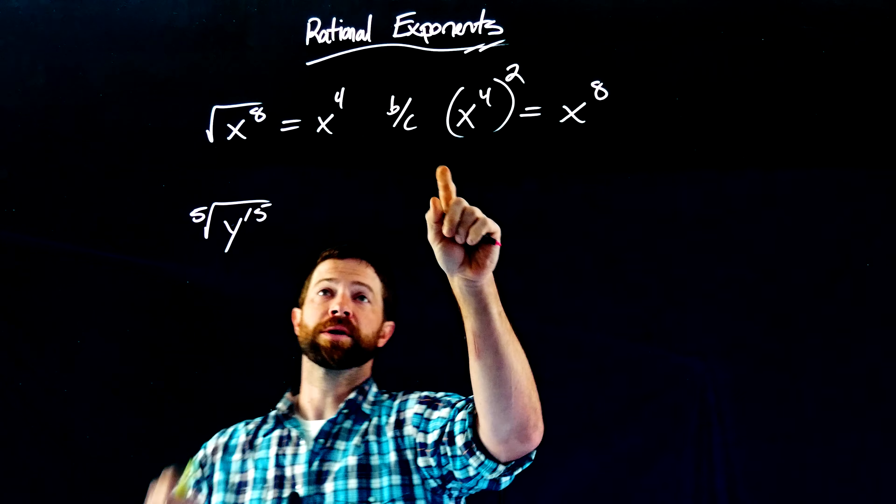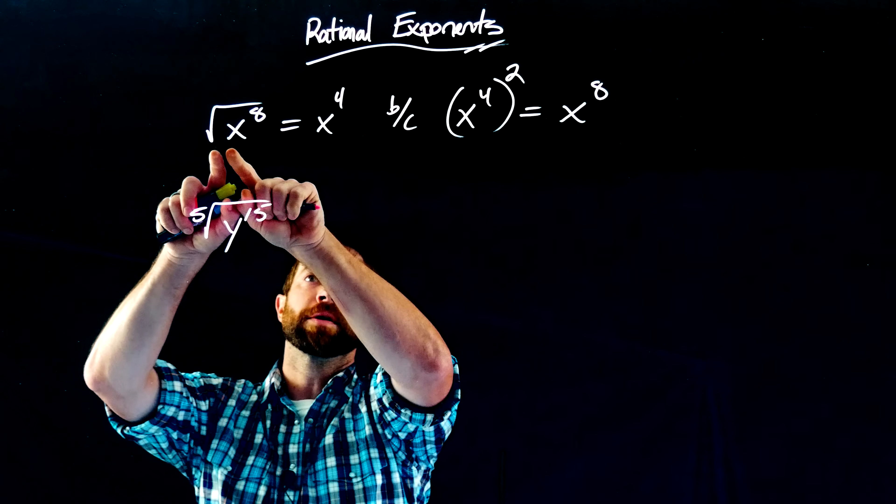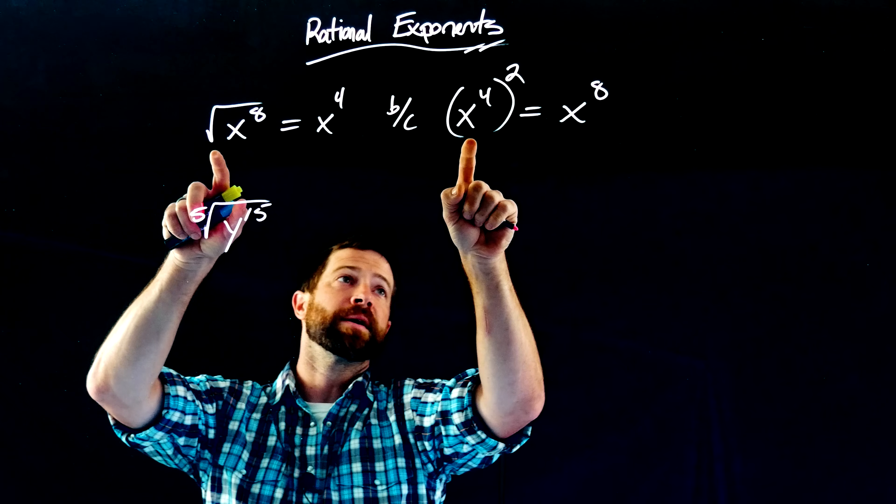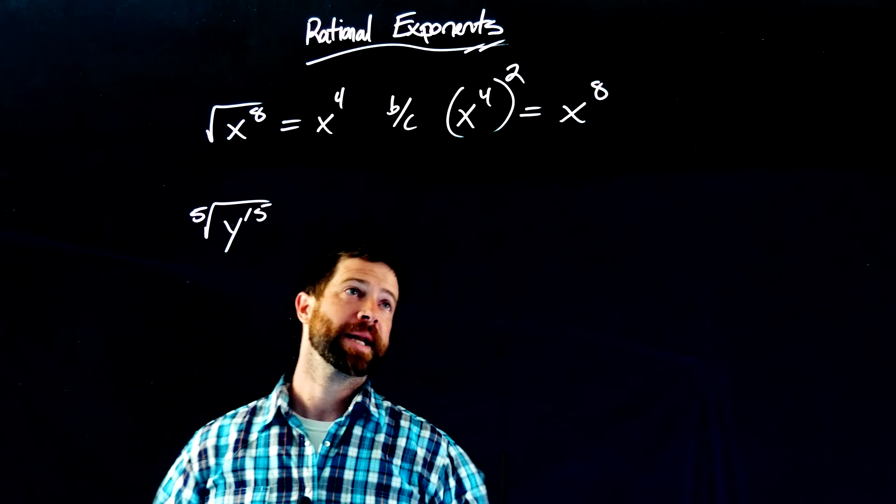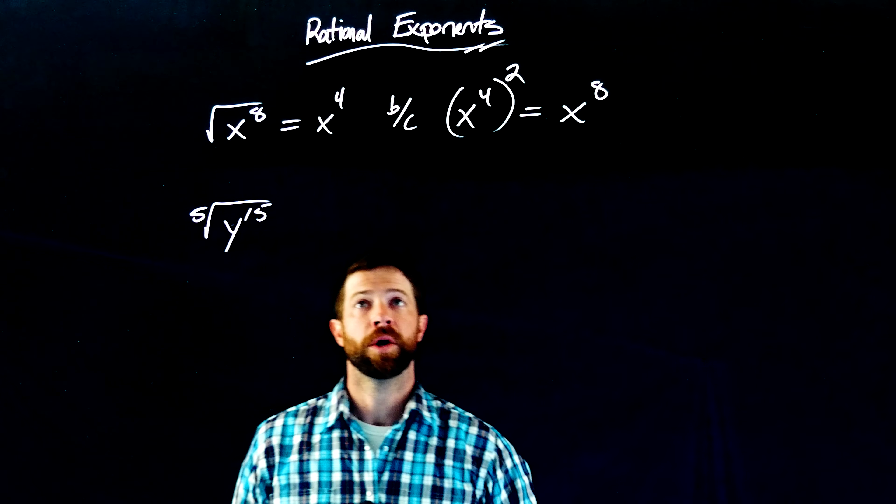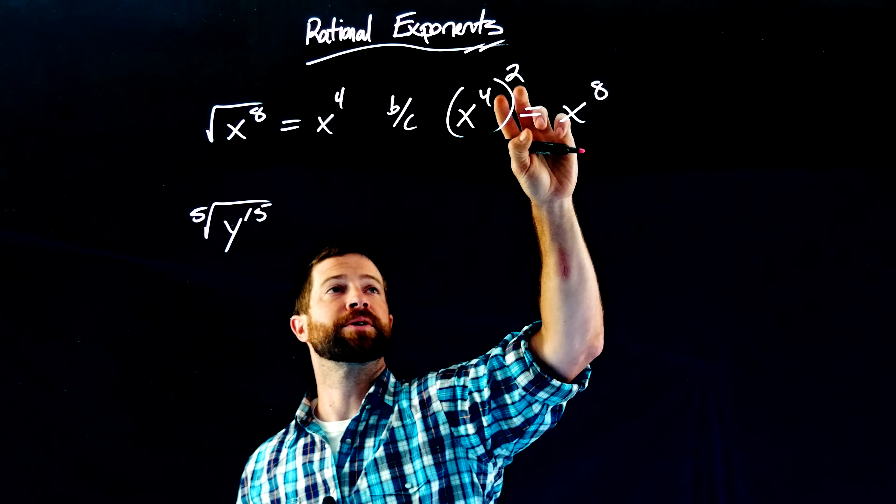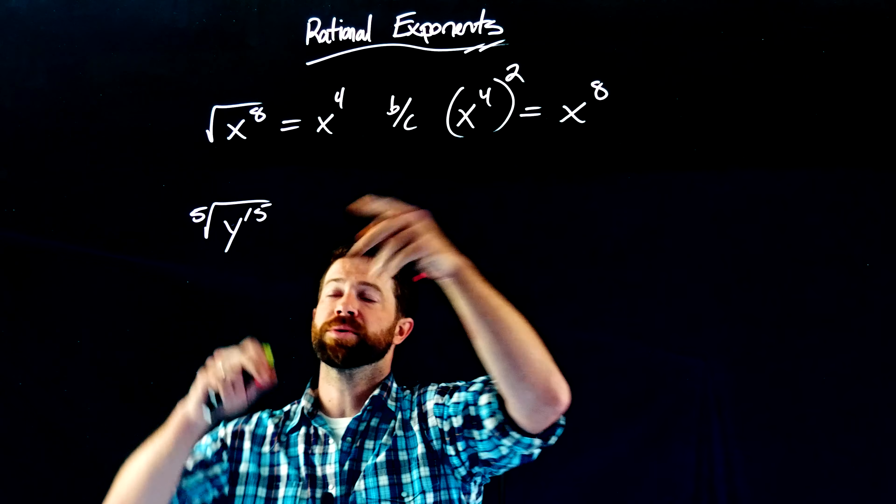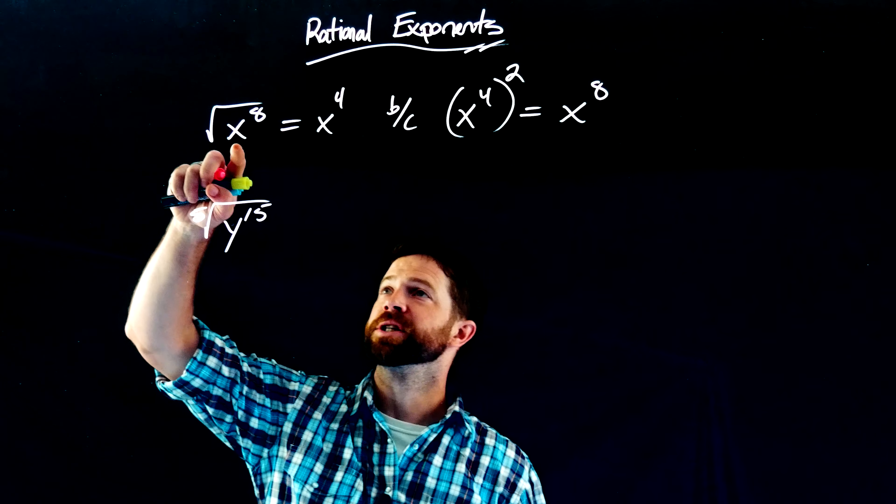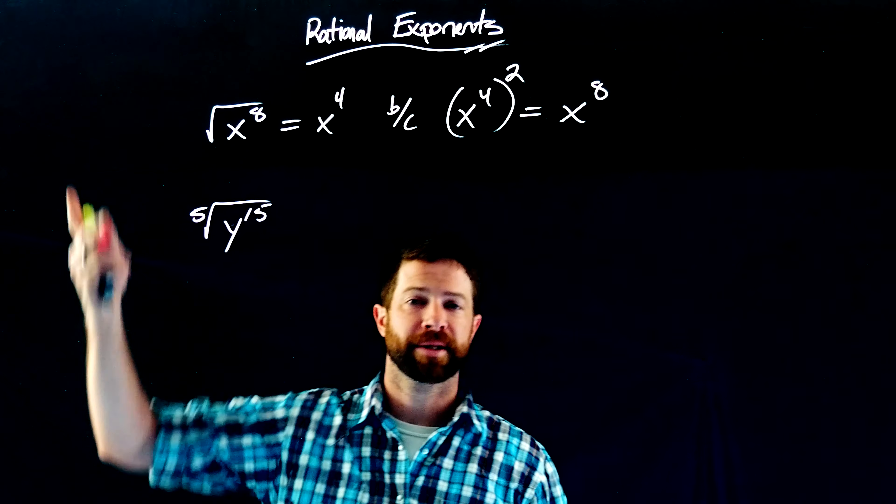Which, again, is always the whole goal of finding the square root of something. What gets squared to get to that thing on the inside, the radicand on the inside there? Well, we understand that since we're going to square, raising something to the power of two means multiplying that exponent by two. So the whole game becomes just divide that exponent by two to take the square root.